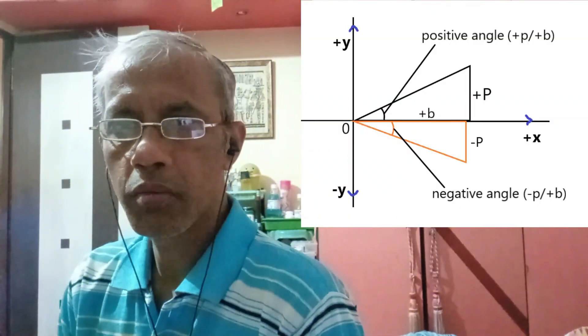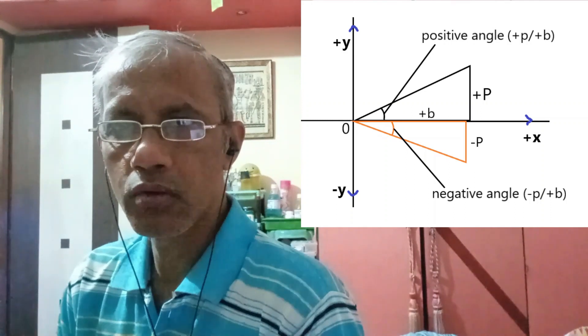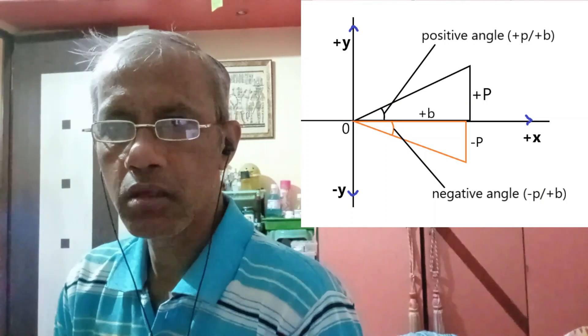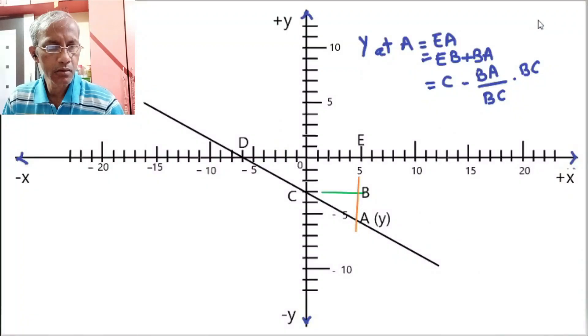Hello everyone. Today in this video we will be discussing the derivation of the equation for a line which makes a negative angle. When the hypotenuse is dipped downwards from the base, it's called a negative angle. So let's draw a line which makes a negative angle cutting the y-axis at a constant value, and we will derive the equation for that.